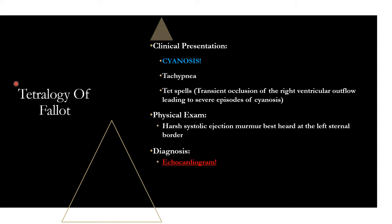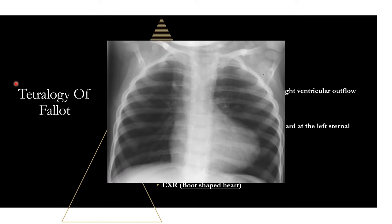Diagnosis is with an echo, as with all of these. You can also do an ECG and chest x-ray. On chest x-ray, an important finding to know is a boot-shaped heart — and it literally looks like a boot or shoe. This occurs because the heart is upturned with the apex pointing up, combined with the concave shape of the main pulmonary artery, forming what looks like a boot on chest x-ray. Remember this because it may be described in a vignette.